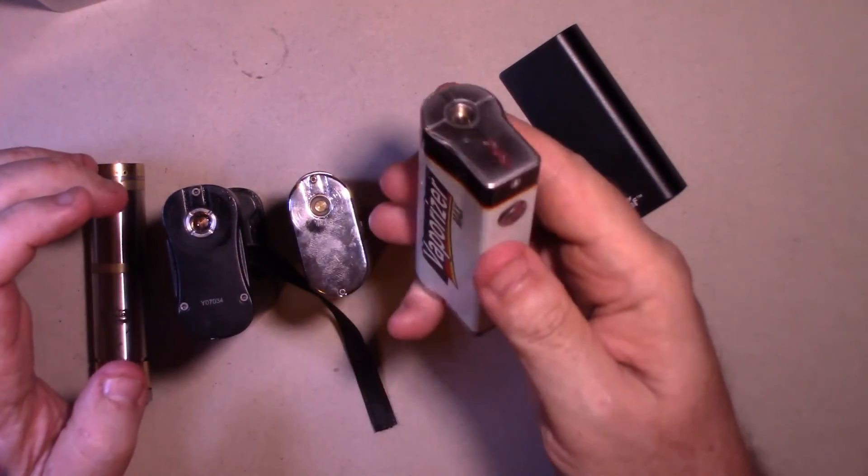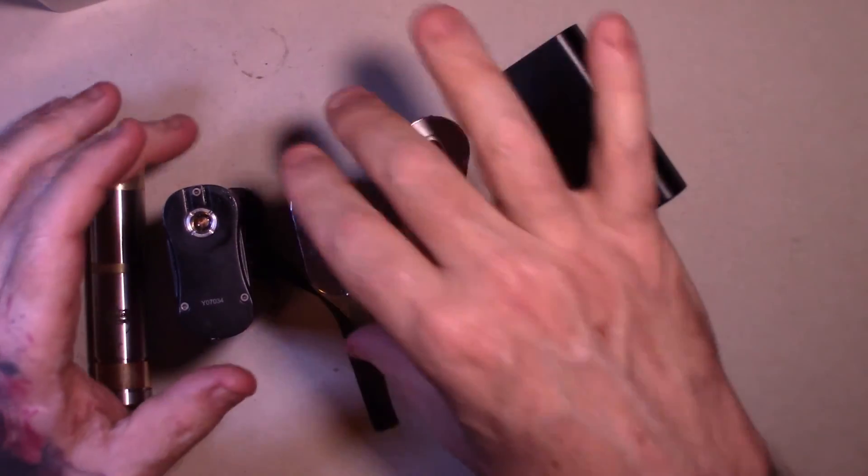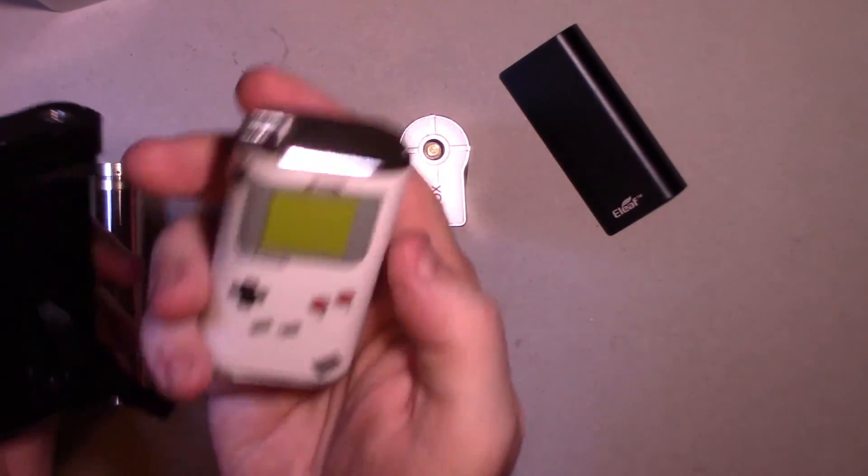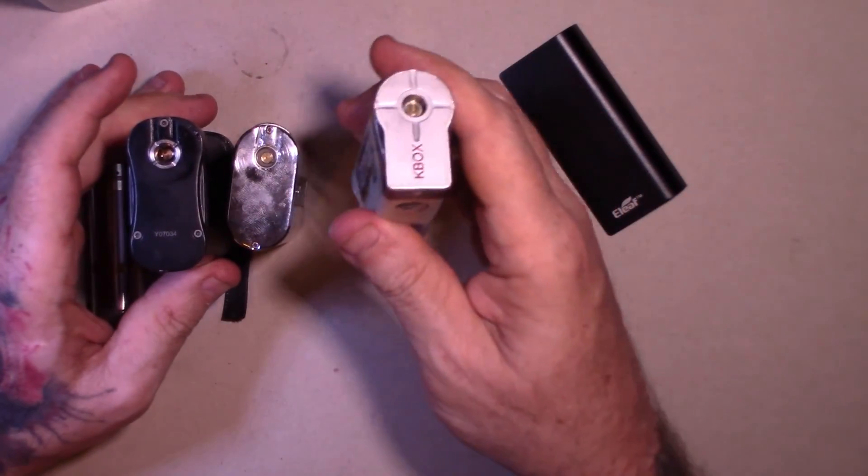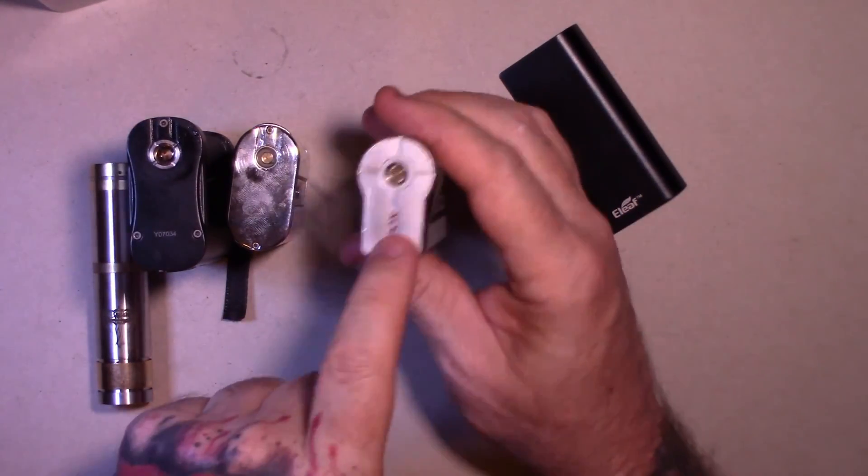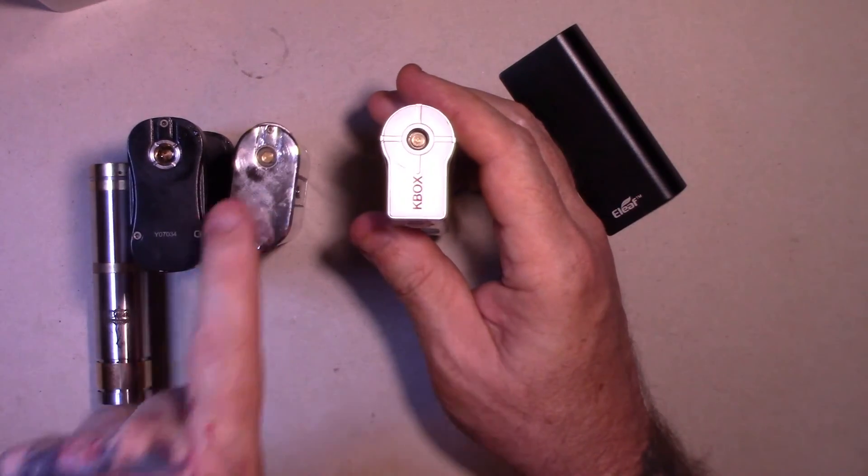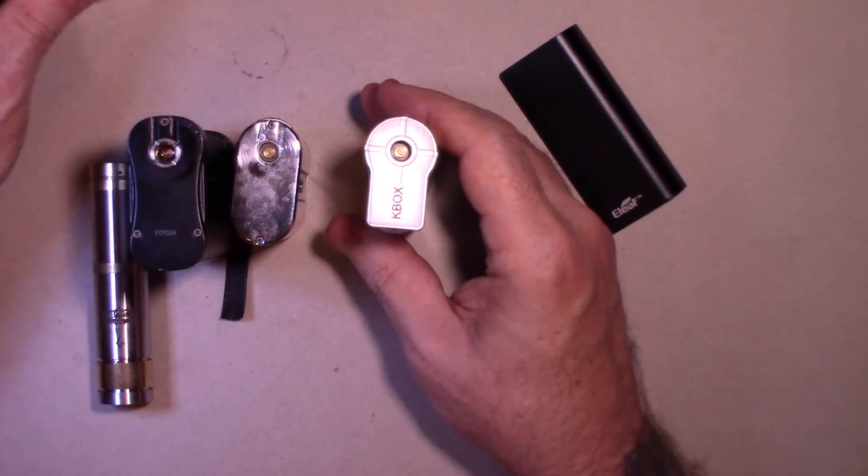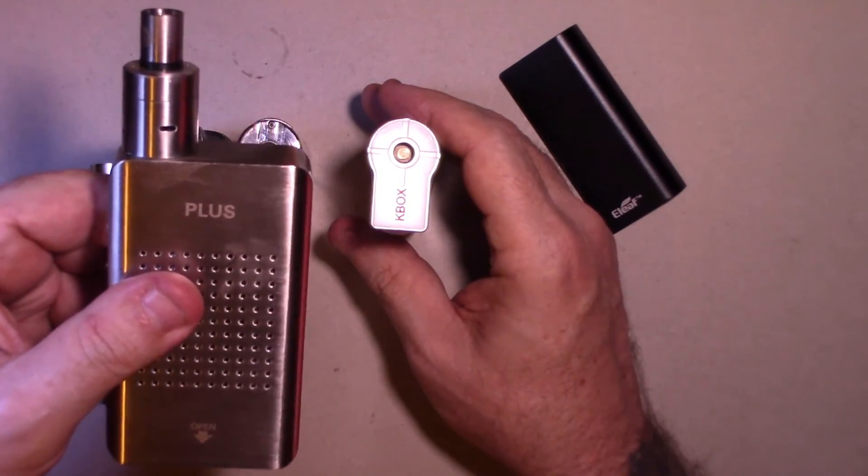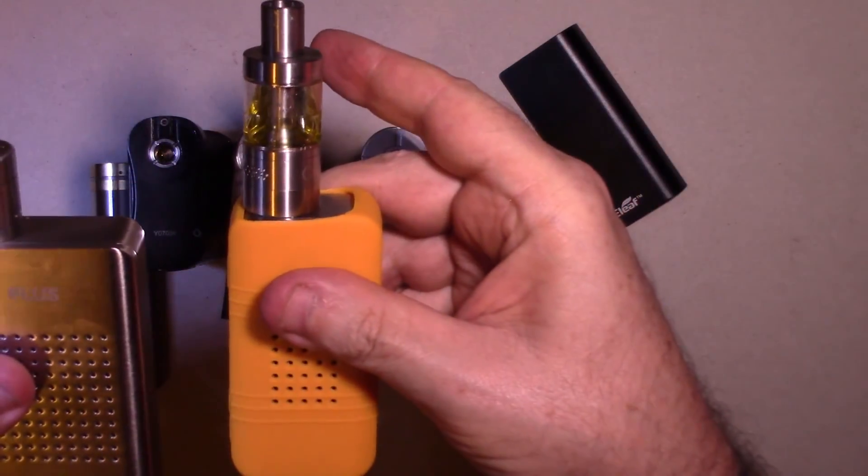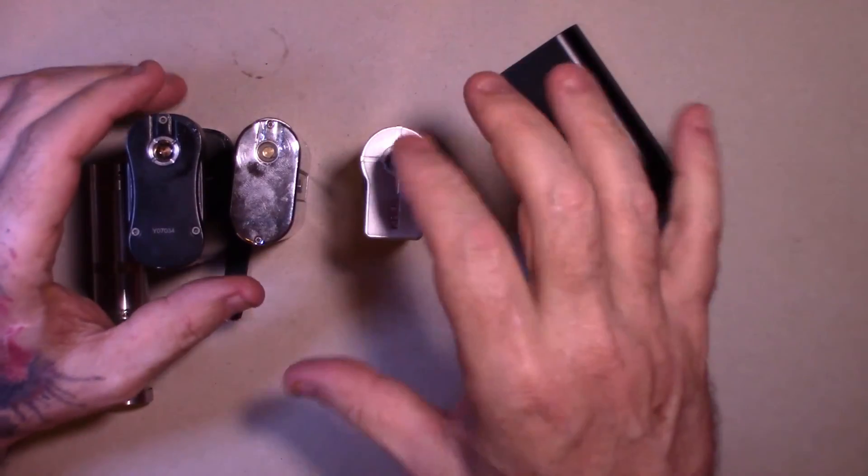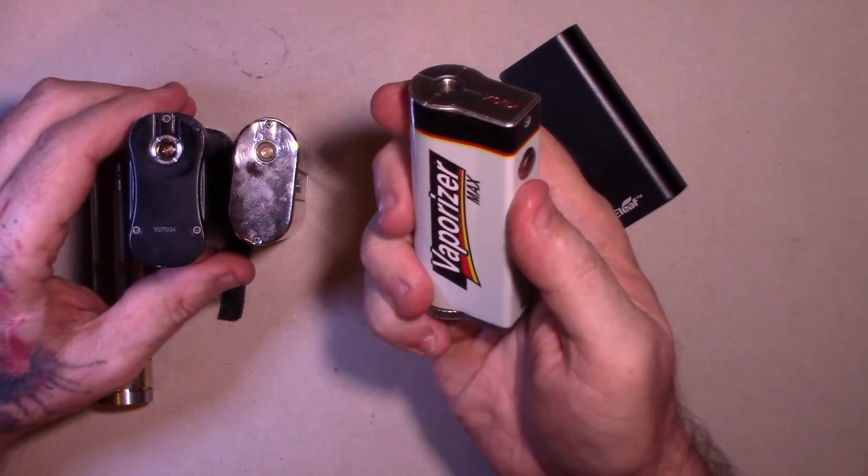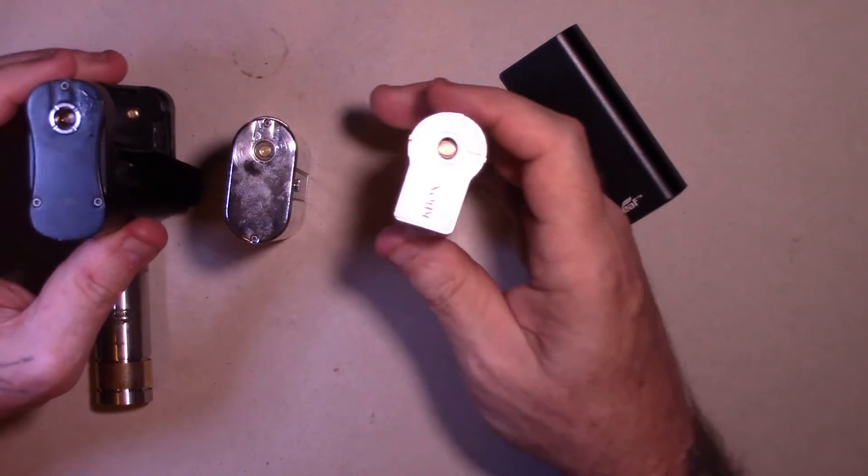For instance, this is a Kanger K box. These two are I lease, this is a 50 watt, this is a 100 watt. If I have a Kanger tank, I can use it on this Kanger K box and both of these I lease, and this Cooper, and this Cooper. So you don't have to keep a Kanger tank on a Kanger box. You can put it on anything.